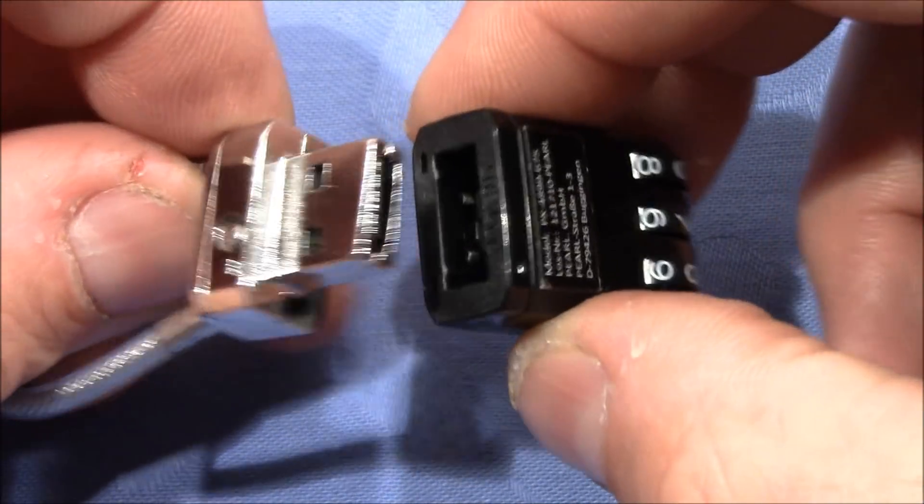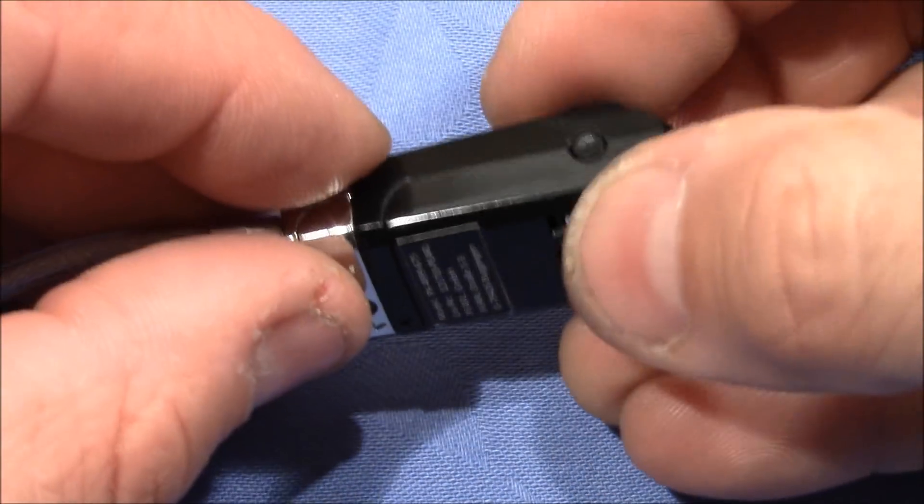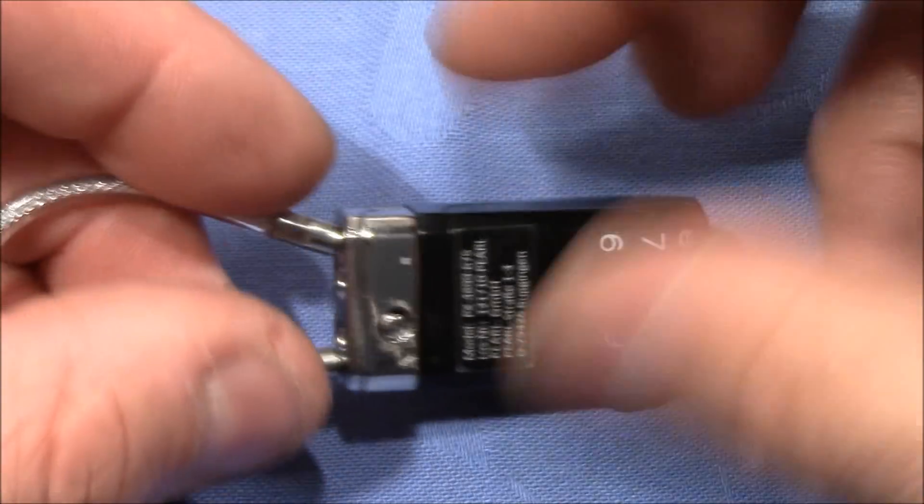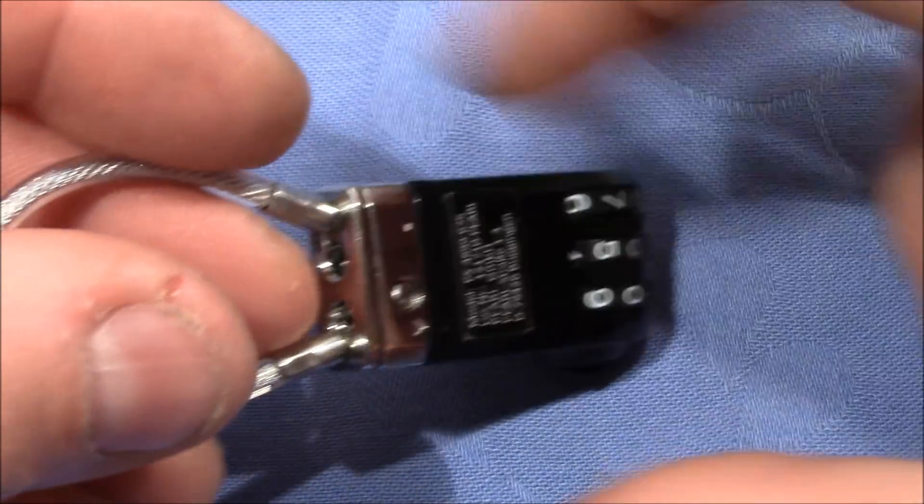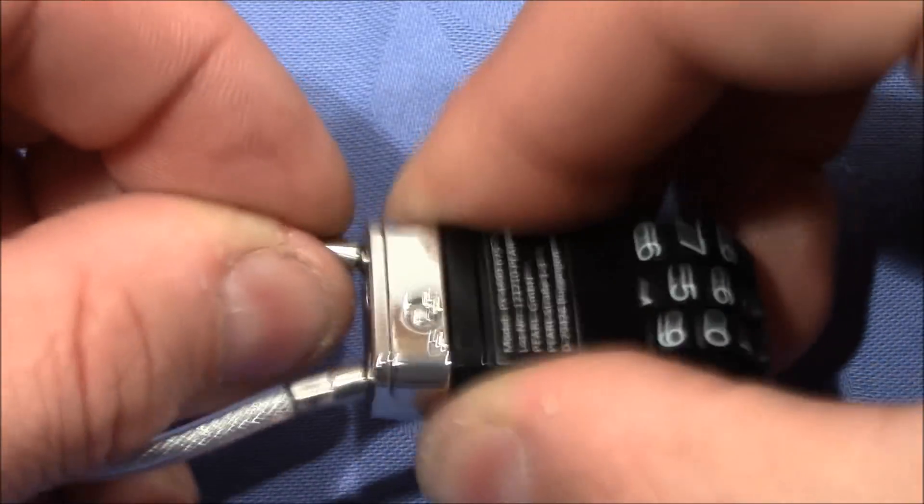Now when you put this on top of it, you prevent this tongue from being able to be pushed out, and so this wire is secured.